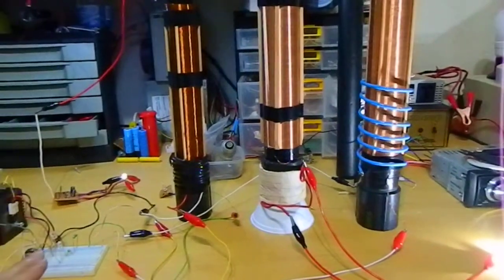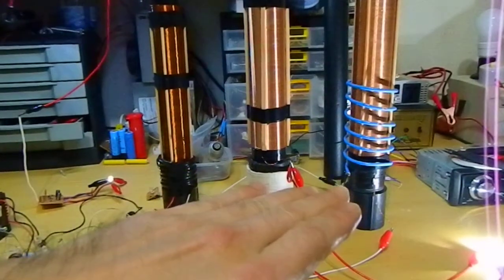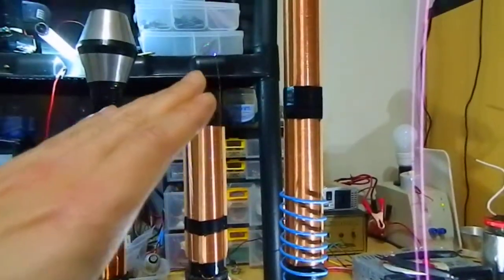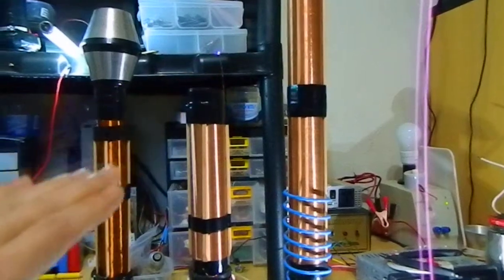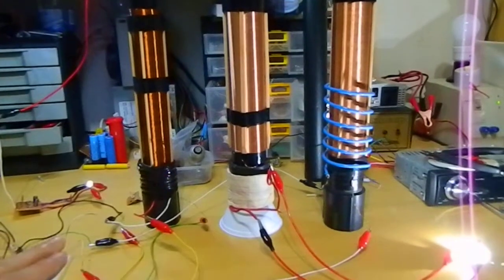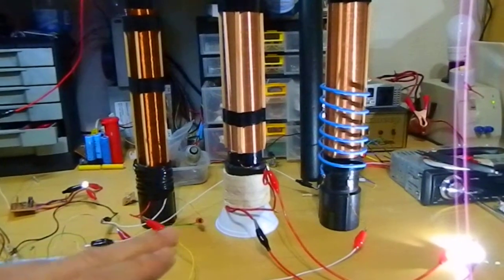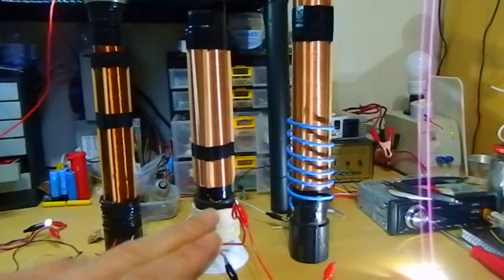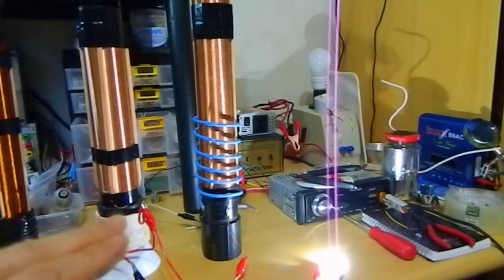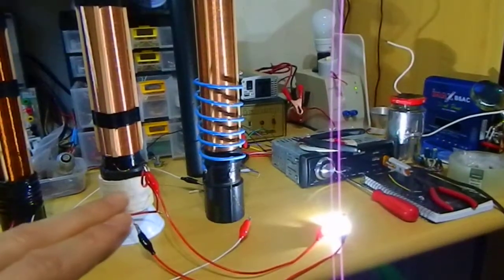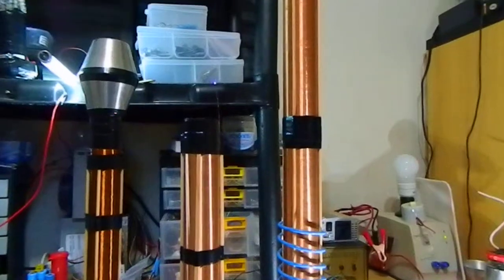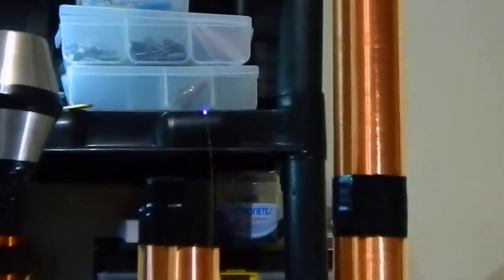Without connecting the circuit to earth ground, I have a good output and plasma bursts in here. And when connecting the earth ground to the circuit, sharing the same earth ground from L4, the output of the Bifiler Tesla coil is much higher. And the plasma bursts, it's much stronger too.